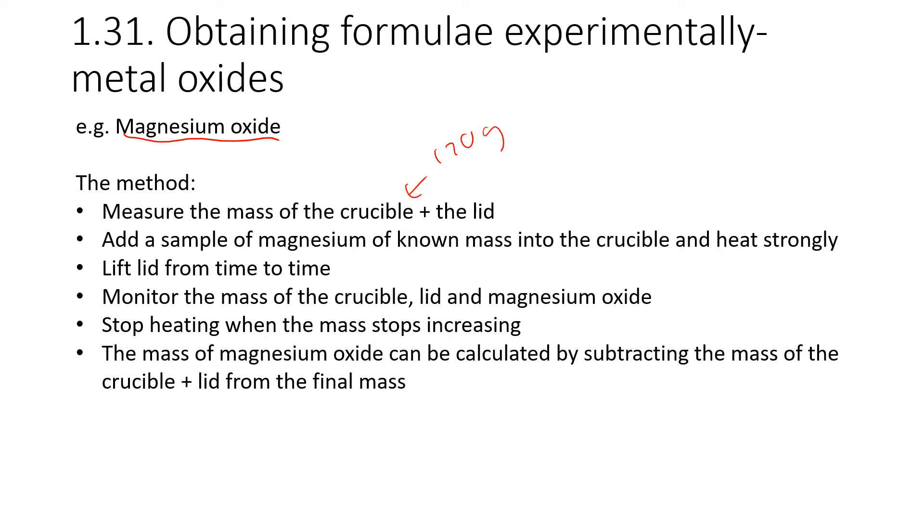What you're going to do throughout this is to monitor the mass of the crucible. So you're going to let it cool, measure its mass. And remember at this point, the crucible contains the magnesium oxide and the remaining magnesium and the lid. You're going to keep monitoring that. Now, when the mass stops increasing, that will be the point at which the magnesium has stopped reacting with oxygen. So when all of the magnesium has reacted with oxygen, the mass will stop increasing.